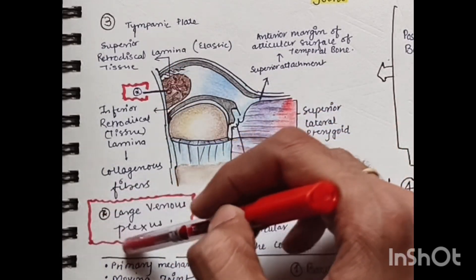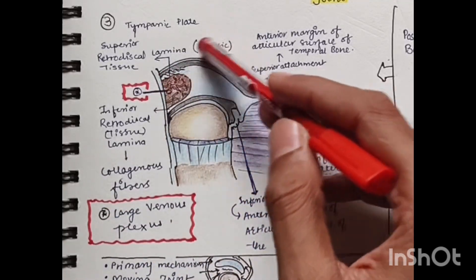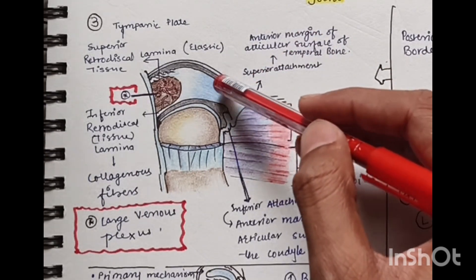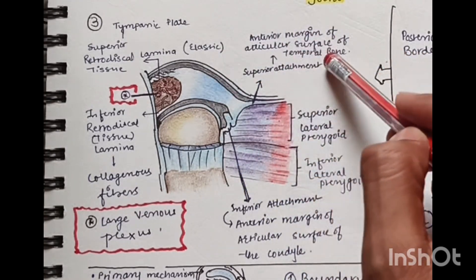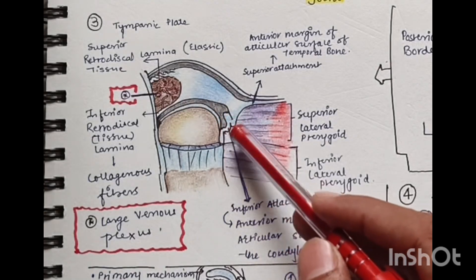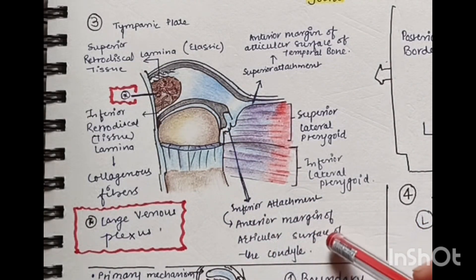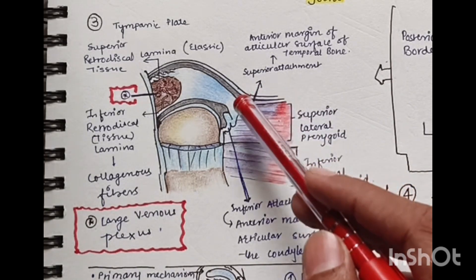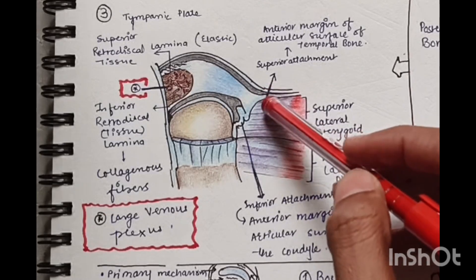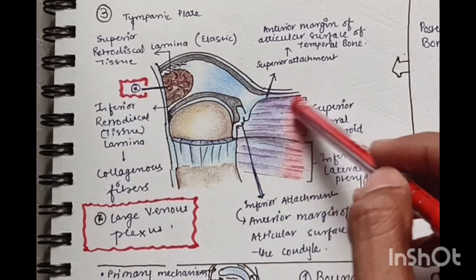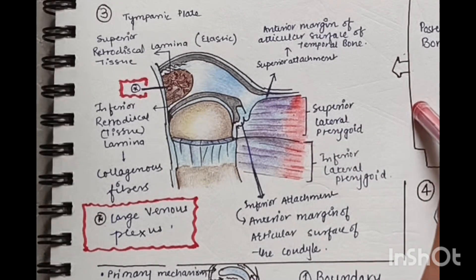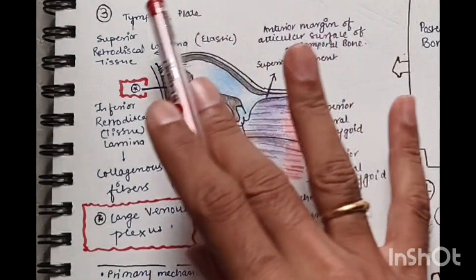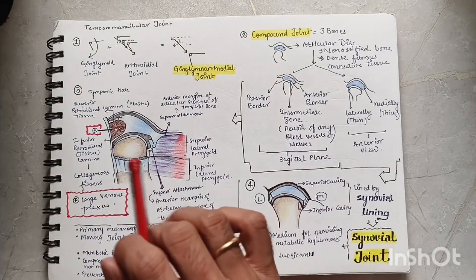In between the laminae are large venous plexuses filled with blood, providing blood supply to the TMJ. Anteriorly, the superior attachment connects the anterior disc to the anterior margin of the articular surface of the temporal bone, and inferiorly to the anterior margin of the condyle. Also anteriorly, the superior belly of the lateral pterygoid attaches the anterior surface of the disc to the lateral pterygoid plate, and the inferior belly attaches the neck of the condyle to the lateral pterygoid plate.